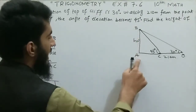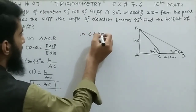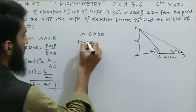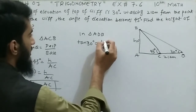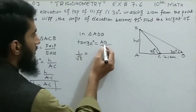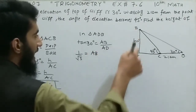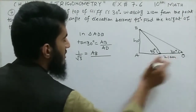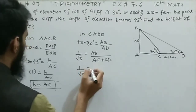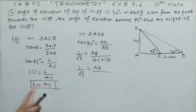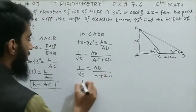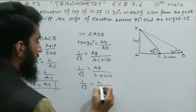Now taking triangle ADB, the angle at A is 30 degrees. Tangent 30 equals perpendicular AB divided by base AD. AD equals AC plus CD. Tangent 30 equals 1/√3 equals AB divided by (AC + CD). Since AB equals AC equals H, and CD is 10 meters: 1/√3 equals H divided by (H + 10).